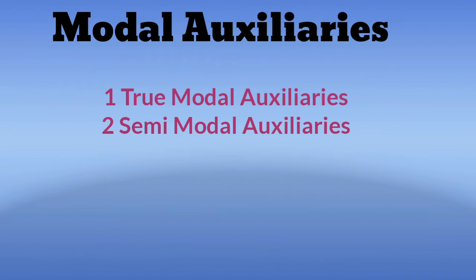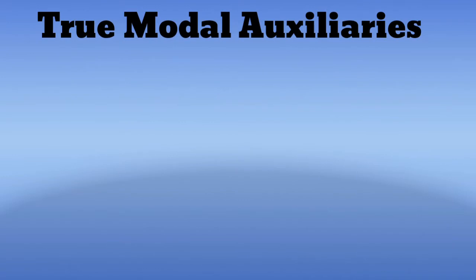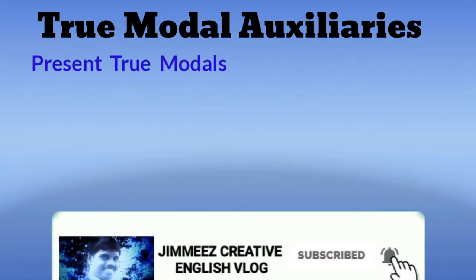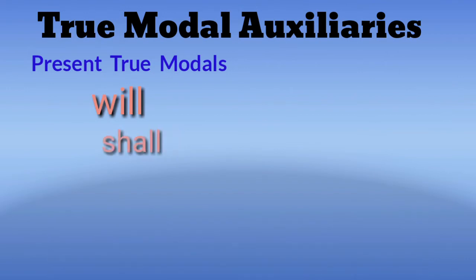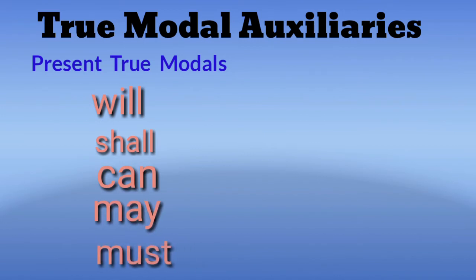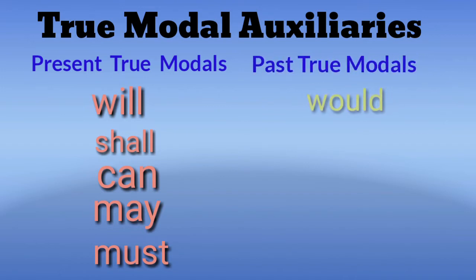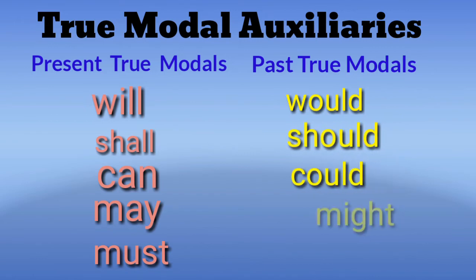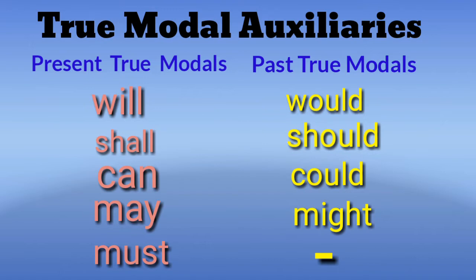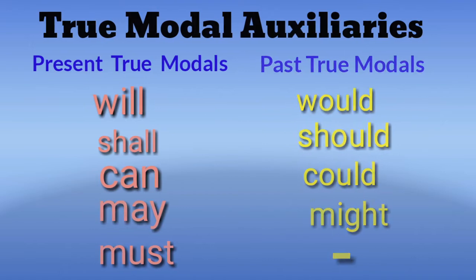We will learn what are the present true modals and past true modals. Look at the table: present true modal auxiliaries are will, shall, can, may, and must. Past true modals are would, should, could, and might. Remember: will, shall, can, may, and must are used to express future present form; on the other hand, would, should, could, and might are used to express future past form.